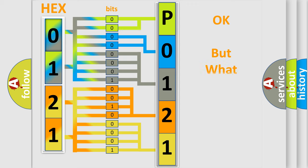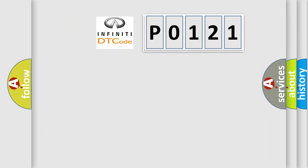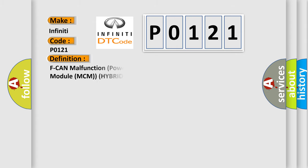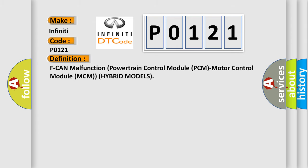We now know how the diagnostic tool translates the received information into a more comprehensible format. The number itself does not make sense to us if we cannot assign information about what it actually expresses. So, what does the Diagnostic Trouble Code P0121 interpret specifically for Infiniti car manufacturers?